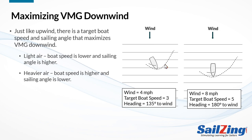In heavier air, we can sail lower and still maintain higher speeds. In this example, if the wind is 8 miles an hour, we might be able to sail dead downwind at 5 miles an hour, maximizing our VMG. Heading up from that would increase our speed some, but cause us to sail more distance and make less progress toward the mark. All this discussion is one of the reasons for the old downwind advice to sail up in the lulls and down in the puffs.